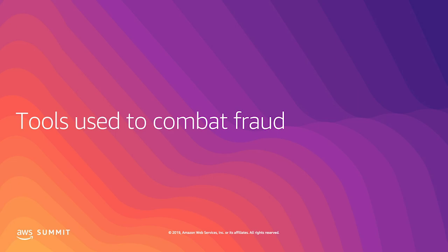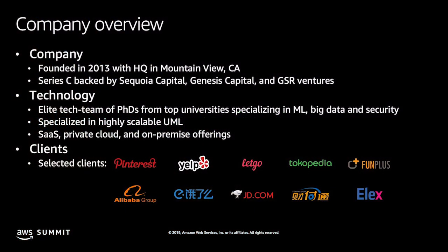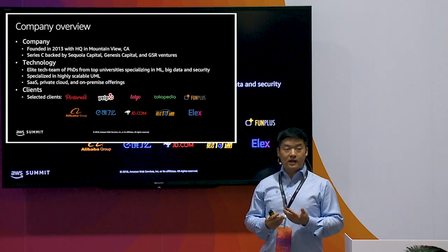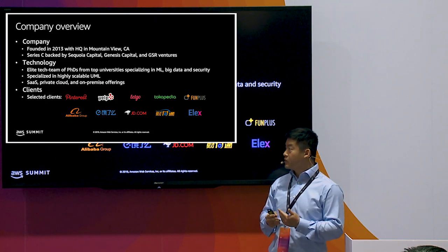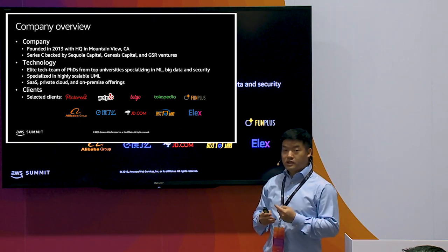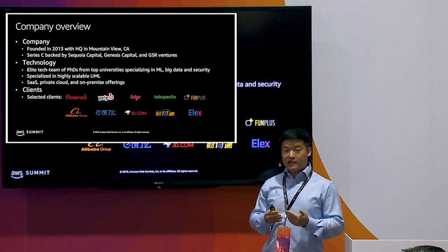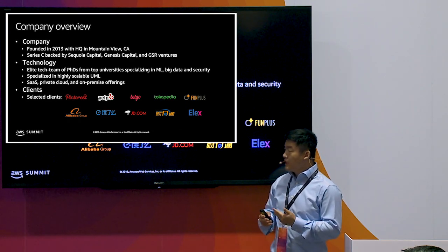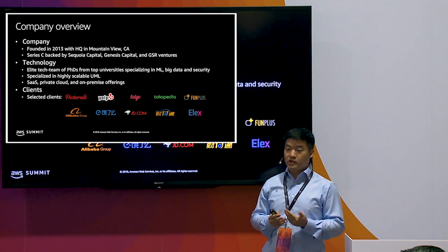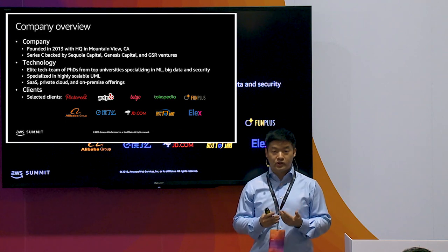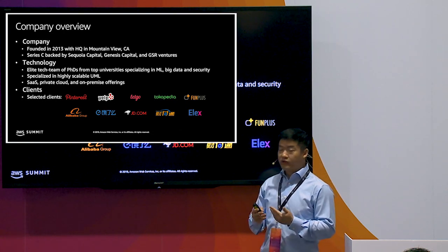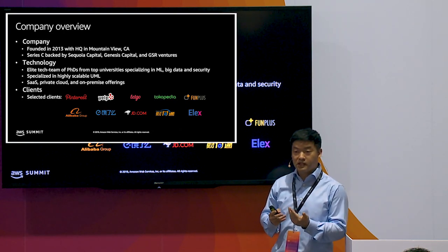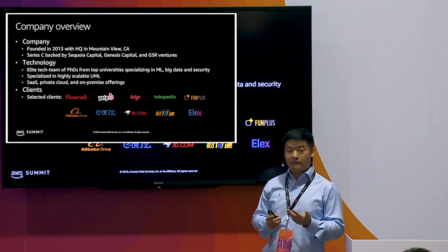Before I get into the tools used to fight against fraud, let me briefly introduce our company in case you don't know who we are. Datavisor is a startup founded in late 2013, focusing on providing fraud detection solutions to our customers. We have a team of about 150 experts in machine learning, big data, and security, specializing in building unsupervised machine learning platforms. Our service runs on both cloud and on-premise solutions, and we have clients including top branded names in social, gaming, e-commerce, and finance.